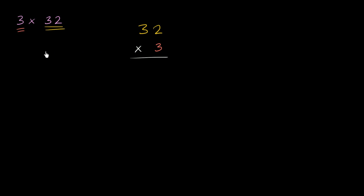Now let's try to compute it. And once again, this is only one way of doing it. There's many ways of doing it. And I want you to think about why this works. So we'll start with this 3 down here. And we're going to multiply it times each of the digits in 32. So we'll start with 3 times 2.